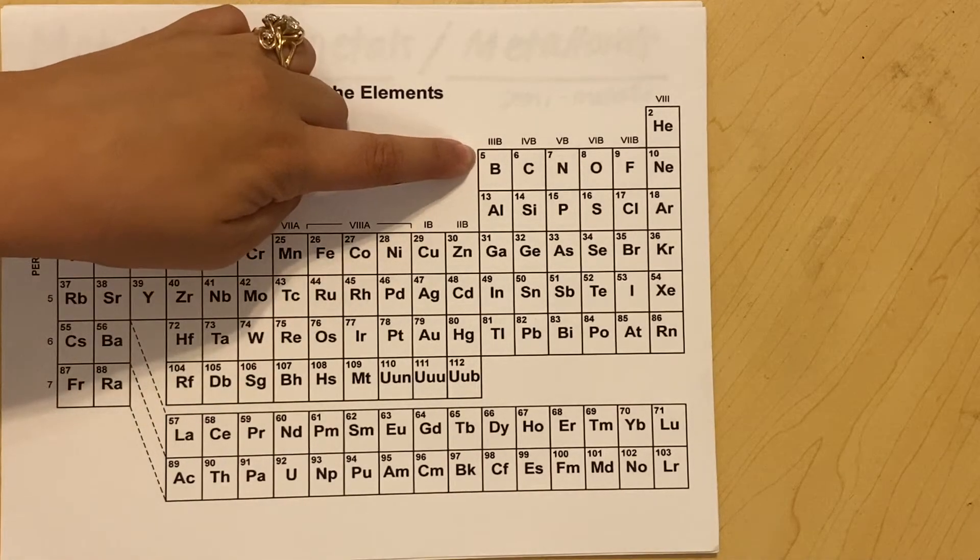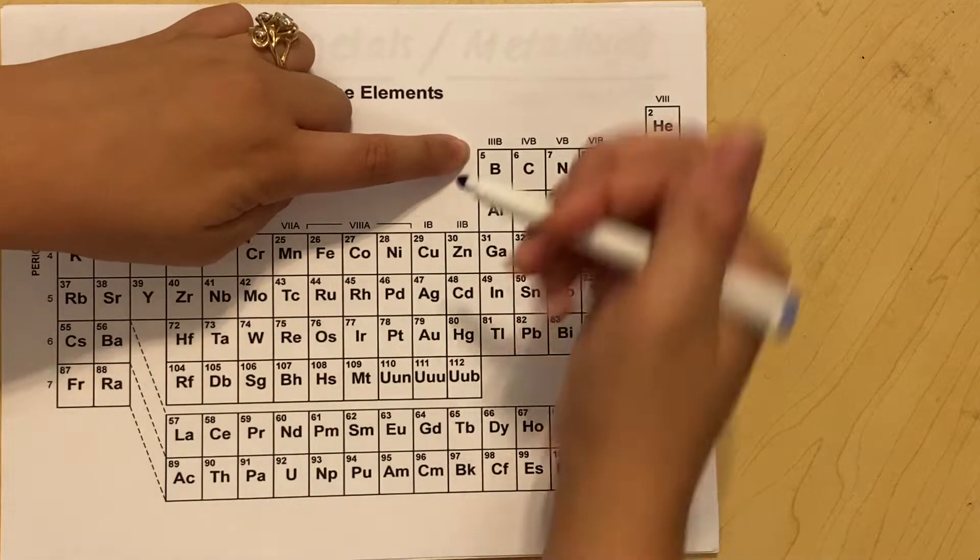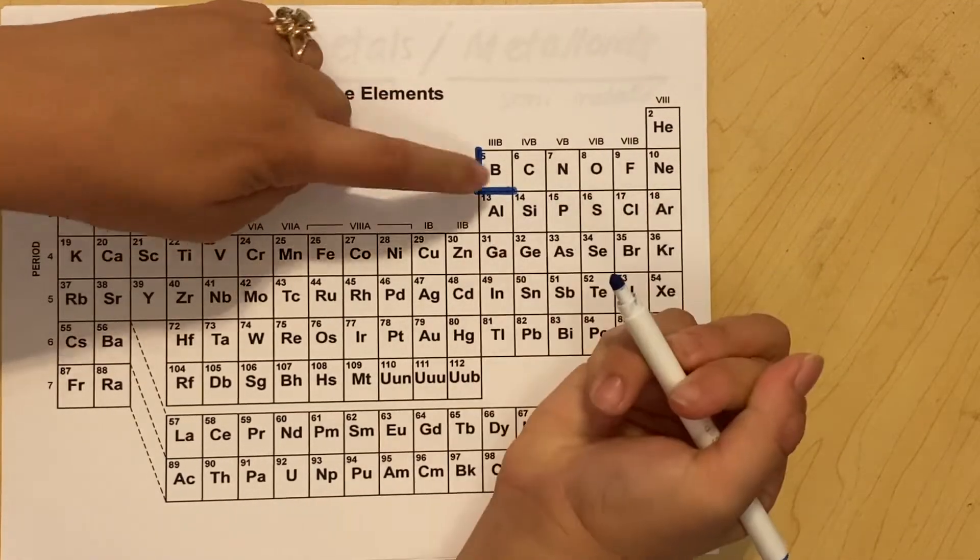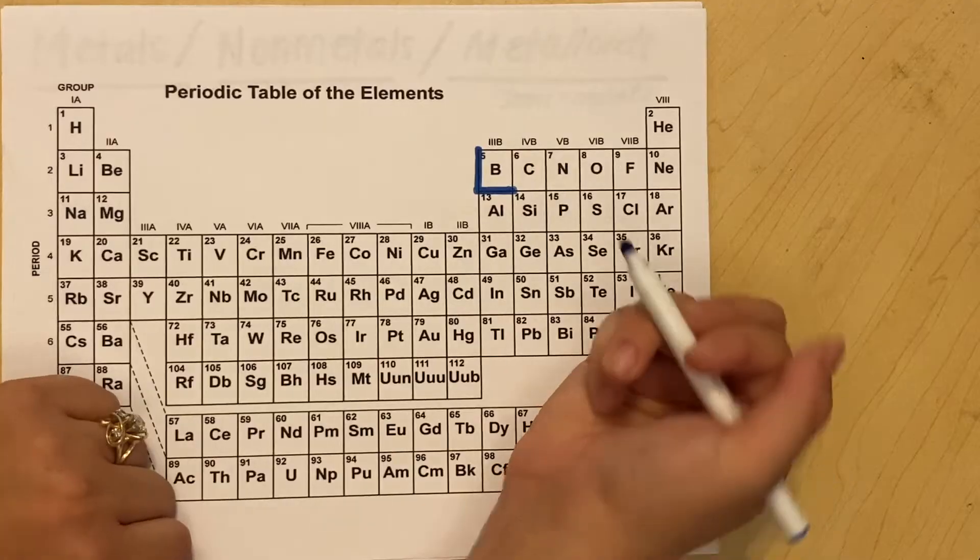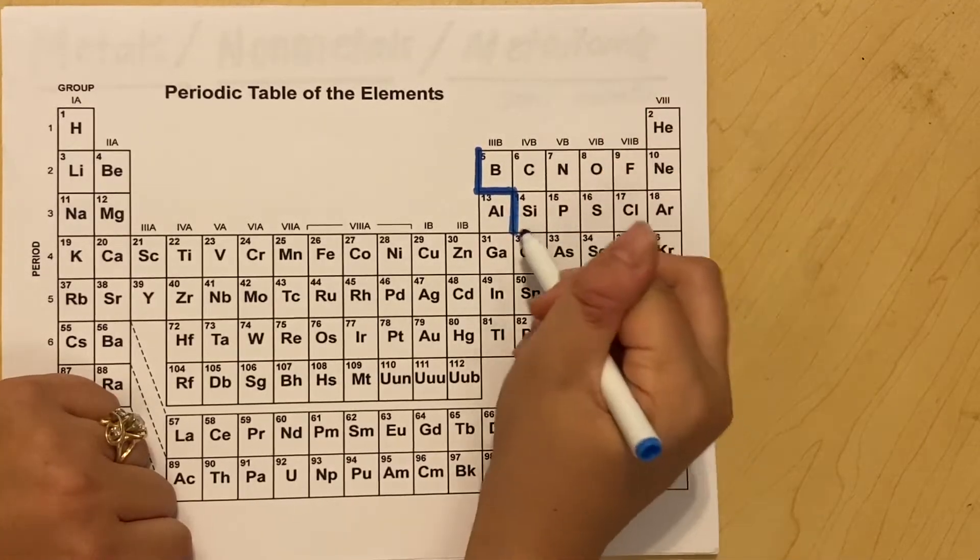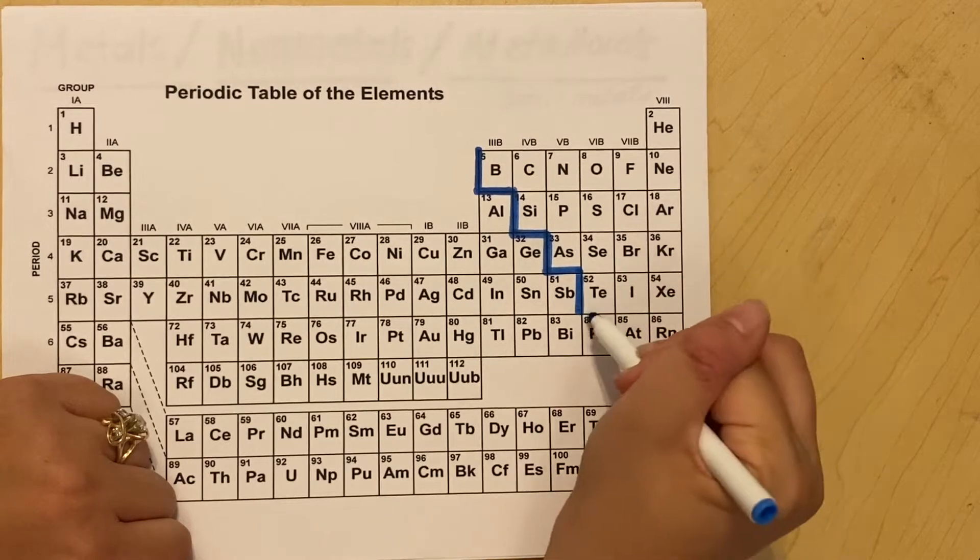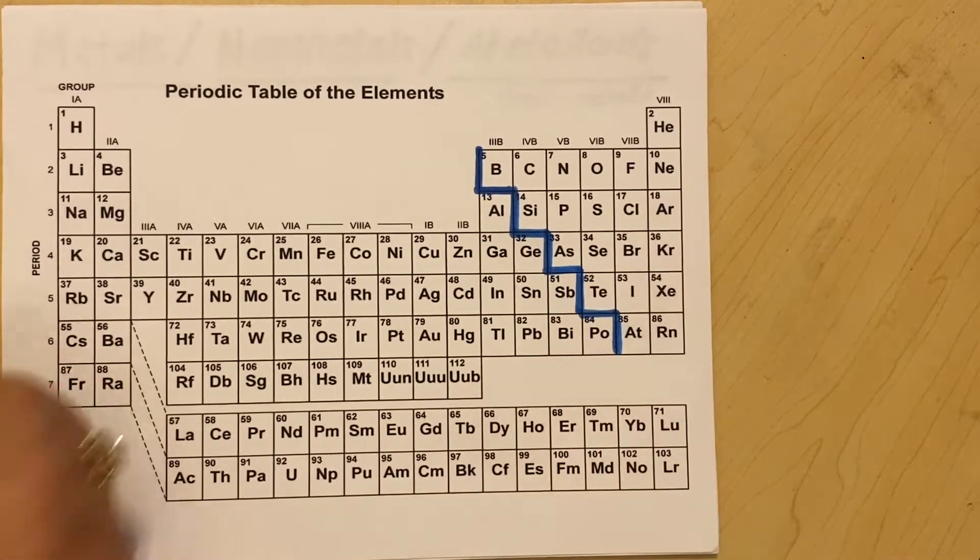All right, so you're going to start at the corner right here. And go down, and then the first stair is between boron and aluminum. And then you just draw a staircase. Easy. Boom, you're done.